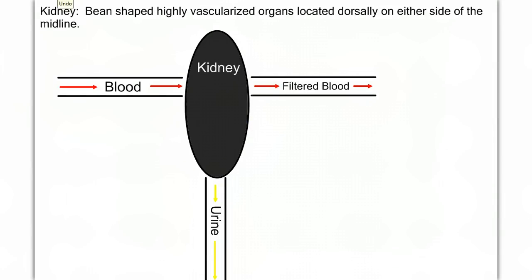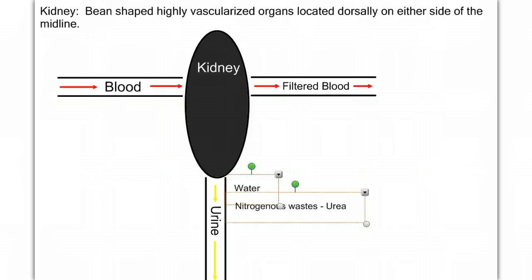The urine is composed primarily of water, but we also remove all the metabolic waste like urea, other toxins, and salts and ions. This system does more than just remove excess water and waste — it also adjusts the levels of certain ions and salts in the blood. Based on hormone signals, this system can make adjustments to ensure that the blood pressure and the pH are maintained.